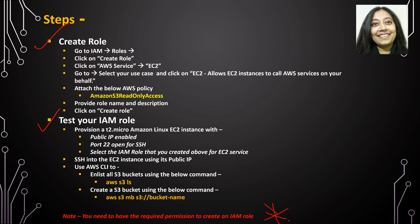To create a role, first we will go to IAM, then Roles, click on Create Role, click on AWS Service, and select EC2. Once we have selected EC2, we will select the use case option that allows EC2 instances to call AWS services on your behalf. We will attach this particular policy, provide the role name and description, and then eventually create the role.